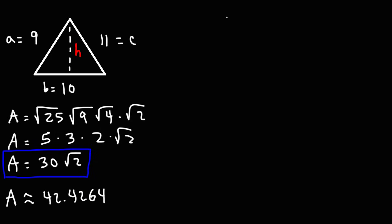So now let's calculate the height. So we know that area is 1 half base times height. And the exact value for the area is 30 square root of 2. And the base we know it's 10. So 1 half of 10 or 10 divided by 2, that's 5.